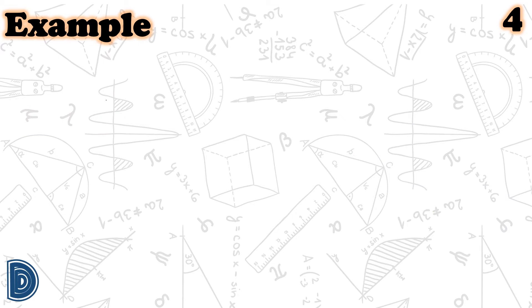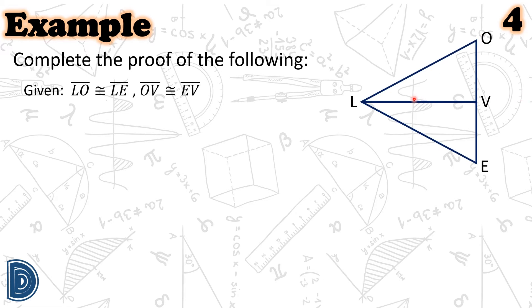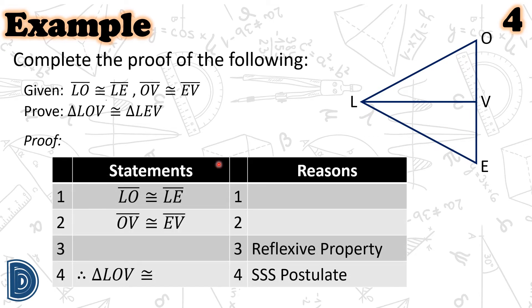Let us have example number 4. Complete the proof of the following. Given: segment LO is congruent to segment LE, and segment OV is congruent to segment EV. Prove that triangle LOV is congruent to triangle LEV. In statement number 1, segment LO is congruent to segment LE — we have a missing reason. Statement number 2, segment OV is congruent to segment EV — the reason is also missing. Statement number 3 is what we need to supply, and that is by the reason of reflexive property. In statement number 4, the other triangle is missing: triangle LOV is congruent to what triangle by the SSS postulate?